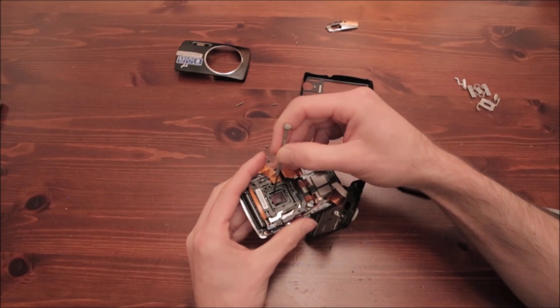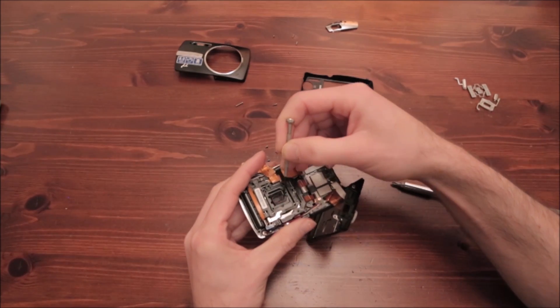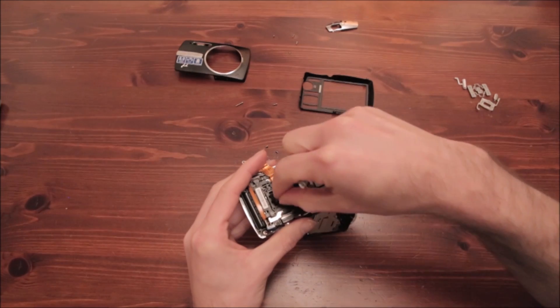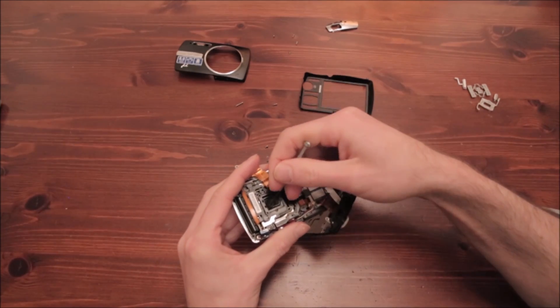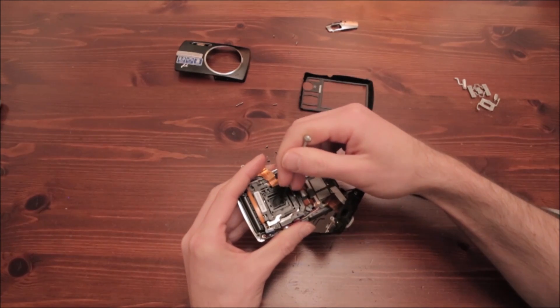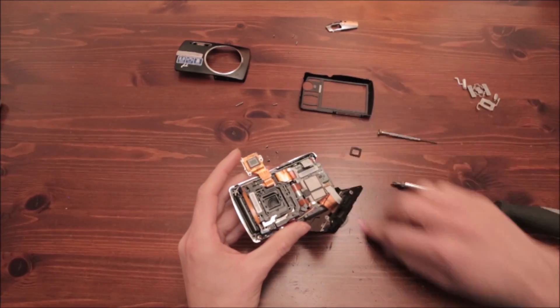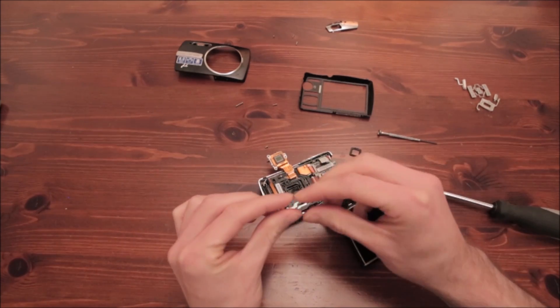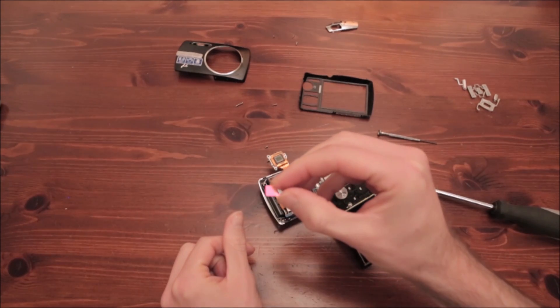Sometimes it takes a bit of time to get the small filter out with the small rubber band that holds the filter. Make sure there is no glass moving inside. And this is the infrared blocking filter.